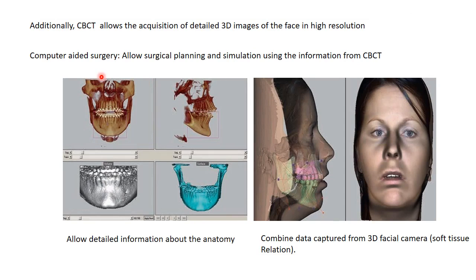CBCT allows the acquisition of detailed 3D images of the face in high resolution, and is useful in planning computer-aided surgery — allowing surgical planning and simulation. It provides detailed anatomical information, such as the anatomy, shape, size, and anteroposterior position of the mandible. When combined with data from a three-dimensional facial camera capturing soft tissue, we can see the soft tissue relationship to hard tissue.